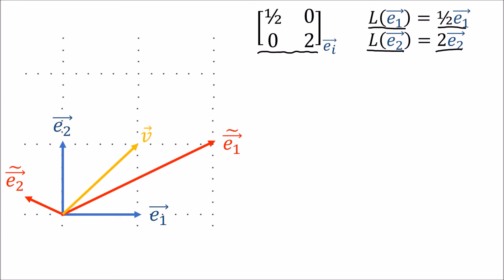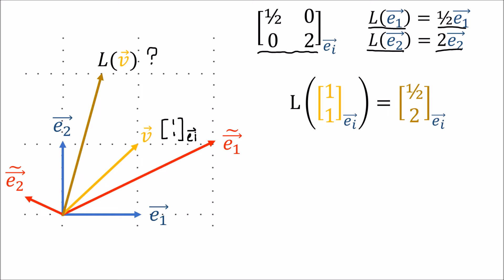Let's say we have this vector V with components 1, 1, and L transforms V into this vector. To figure out the components of L of V, we just multiply the column vector representing V by the matrix representing L, and we get the components 1/2 and 2. So the components of L of V are 1/2 and 2, all done in the E basis.